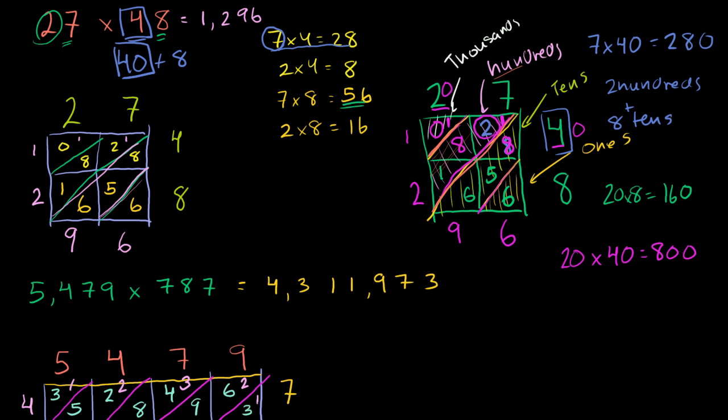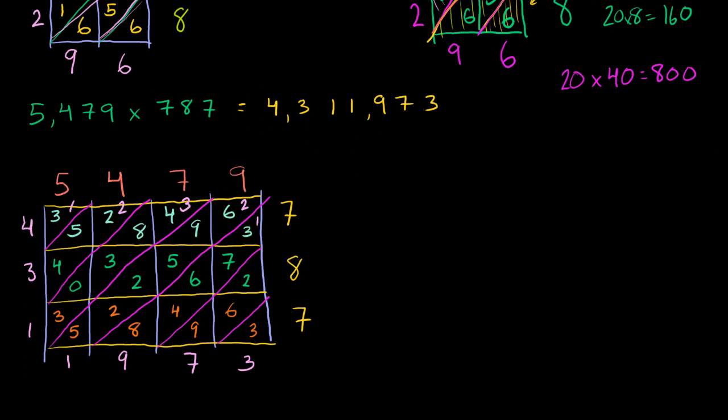And the same reasoning applies to the more complex problem. We can label our places. This was the ones place right there. That was the ones. And it made sense. When we multiplied the 9 times the 7, those are just literally 9s and 7s. It's 63, 6 tens and 3 ones. This right here is the tens diagonal. When we multiplied 9 times 80. Remember, 787, that's the same thing as 7 hundreds plus 8 tens plus 7, just regular 7 ones.